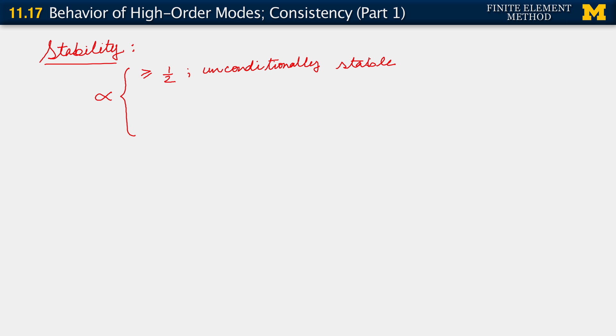And what this means is that it does not matter how big our time step is. So unconditionally stable also meaning any delta t greater than 0. Any of them will give us stability.